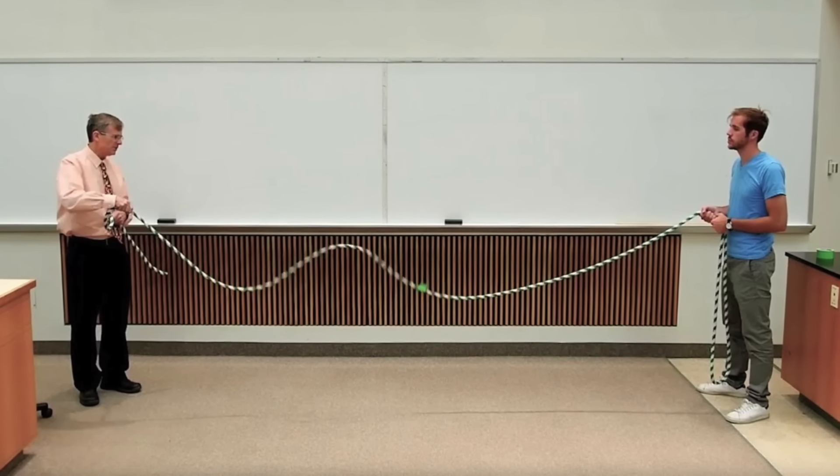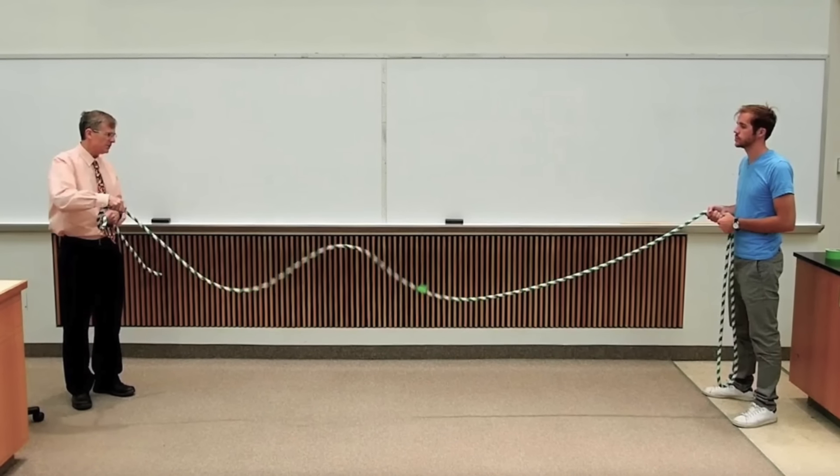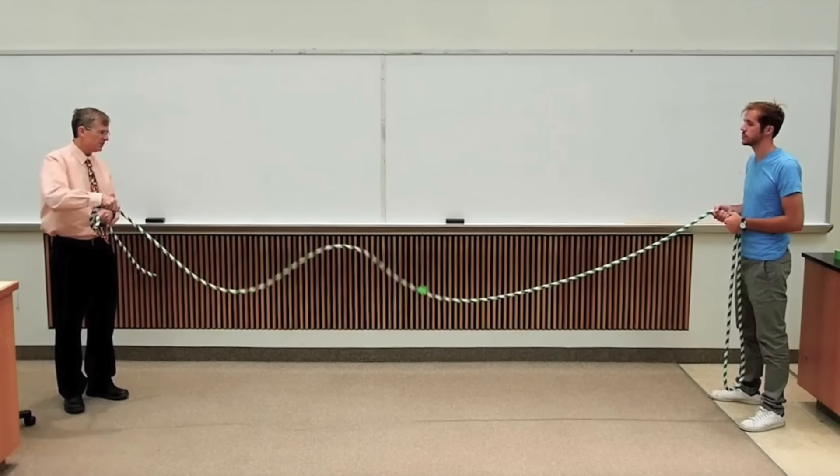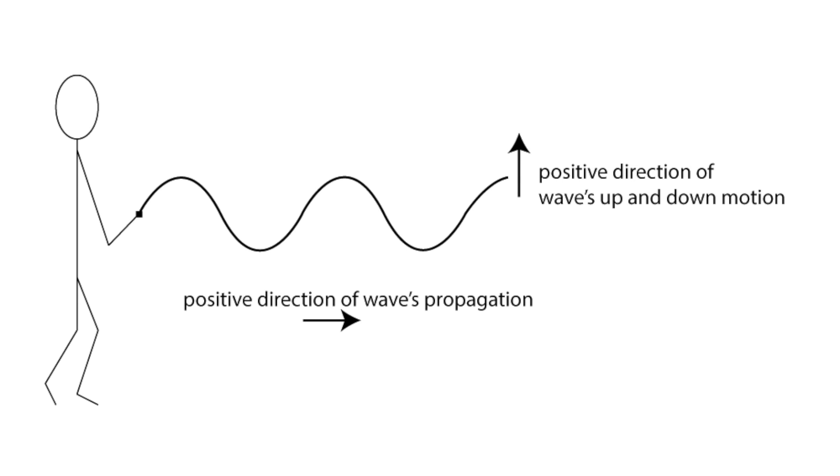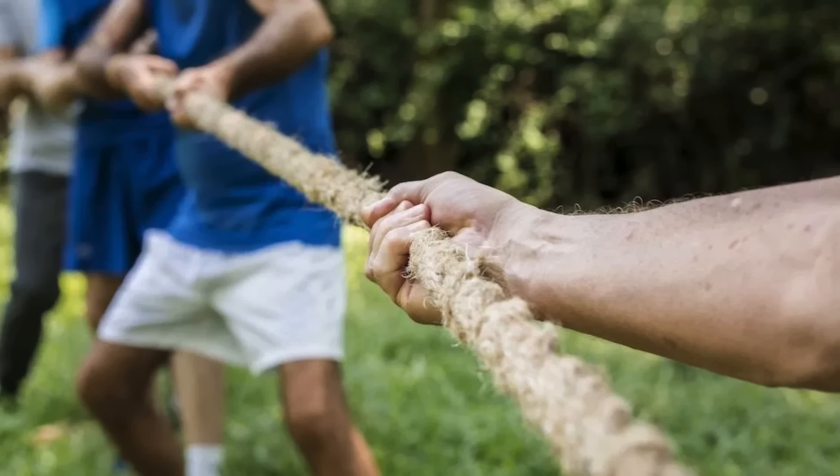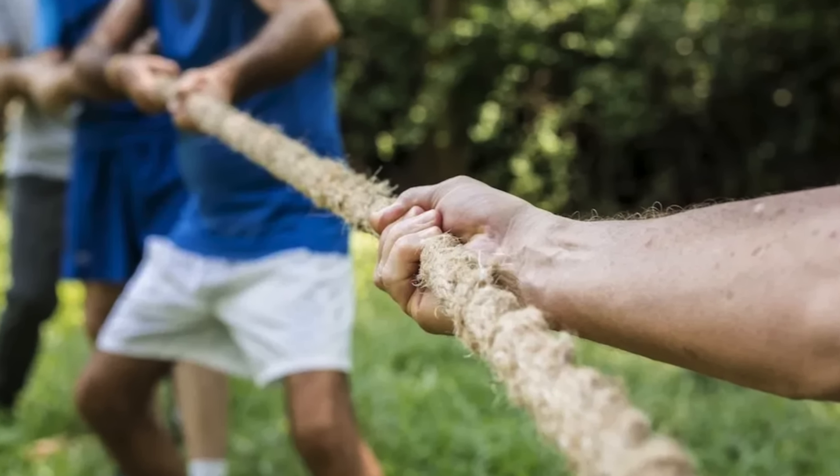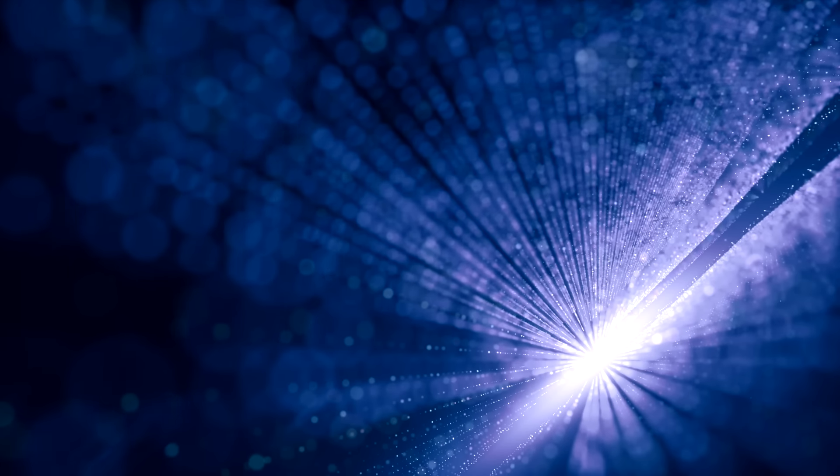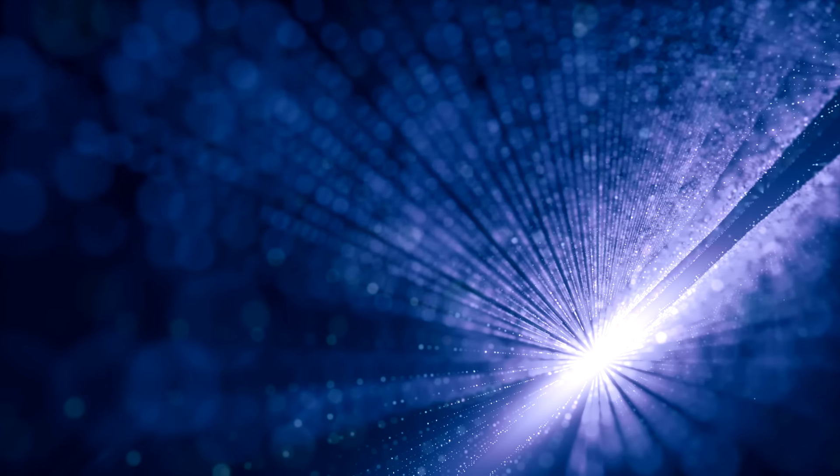If we're each holding the end of a jump rope, and I give it a quick whip, a wave will travel along the length from me to you. That's light. Energy moving through a medium, the rope, over time. Now, if I pull on that rope, you get that information instantaneously. That's the ether, a vast cosmic ocean of neutrinos that connect everything in the universe together.